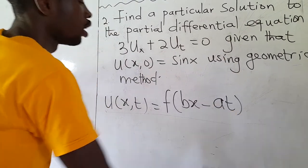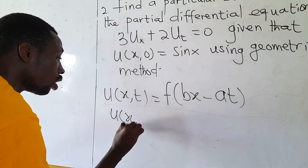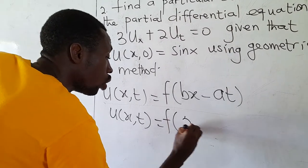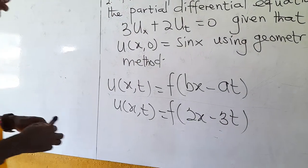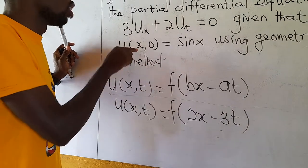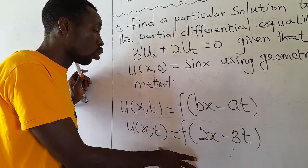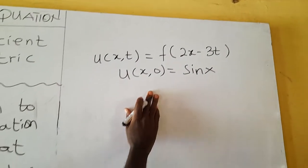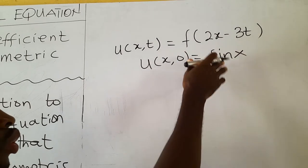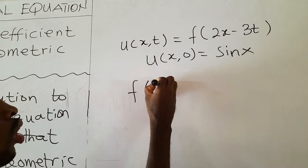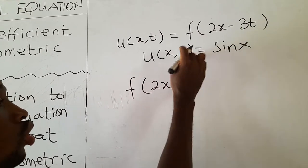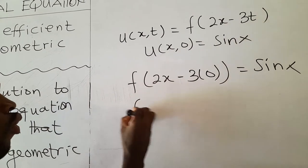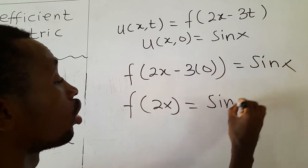This is the general solution using the geometric method. Now they have given us an initial condition, so we substitute to find a particular solution. Since the initial condition sets t equal to 0, we substitute t equals 0 into our general solution. So we get F of (2x minus 3 times 0), which gives F of (2x), and we equate this to sin(x). So F of (2x) equals sin(x).